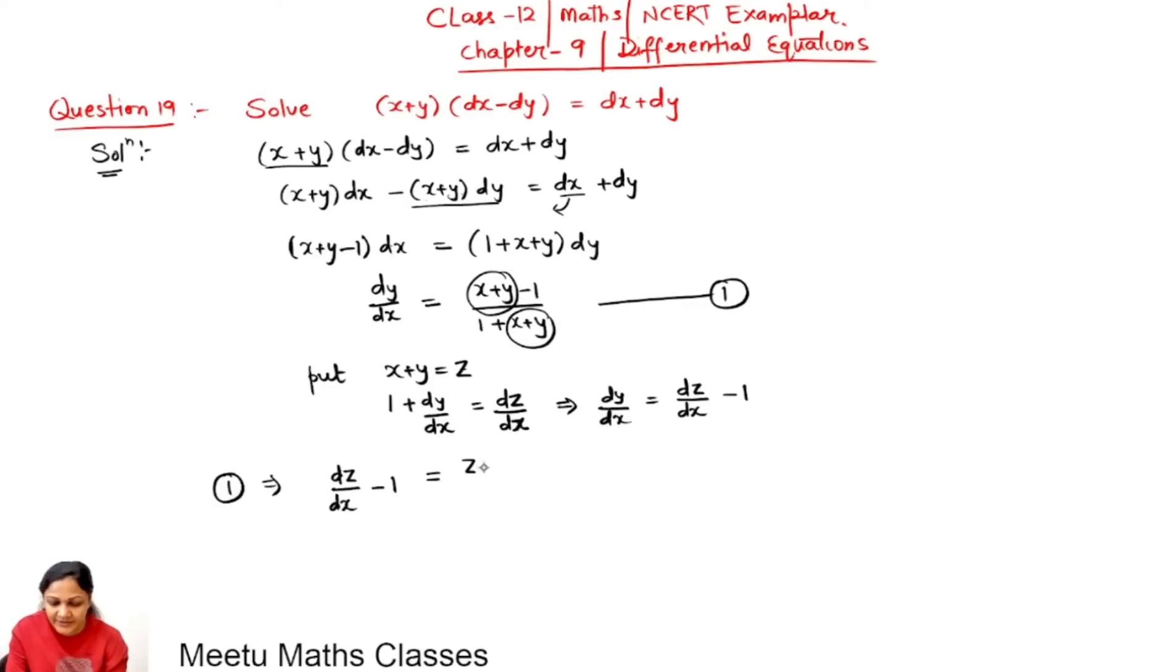So z-1 upon z+1, and dz/dx equals z-1 upon z+1 plus 1, and that is z-1 plus z+1 upon z+1. So 1 will cancel out and we are left with 2z upon z+1.